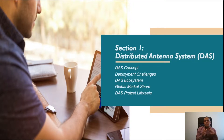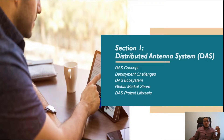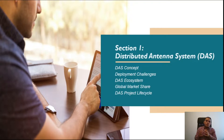Chapter one is an introduction about DAS — distributed antenna system. During section one we're going to explain the DAS concept and the deployment challenges of deploying such a network in the field, what the DAS ecosystem is, what companies participate in deploying DAS worldwide, and what the types and business models of such companies are. You may have heard of something called neutral host, DAS vendor, mobile operators, mobile vendors, contractors, and service companies.